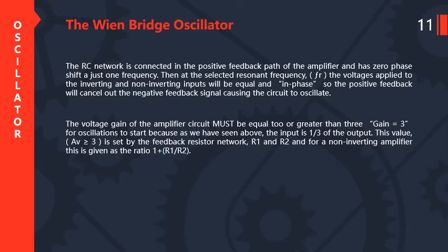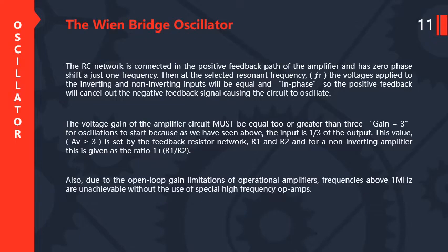The voltage gain of the amplifier circuit must be equal to or greater than 3 for oscillations to start, since the input is one third of the output. This voltage gain AB greater than or equal to 3 is set by the feedback resistor network R1 and R2 for the non-inverting amplifier, given as the ratio 1 plus R1 divided by R2. Also, due to the open loop gain limitation of the operational amplifier, frequencies above 1 MHz are unachievable without the use of special high-frequency operational amplifiers.